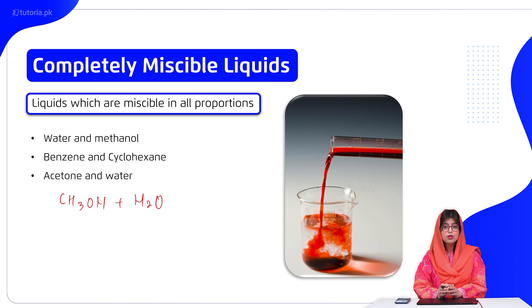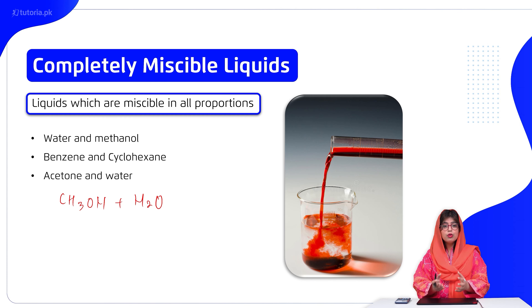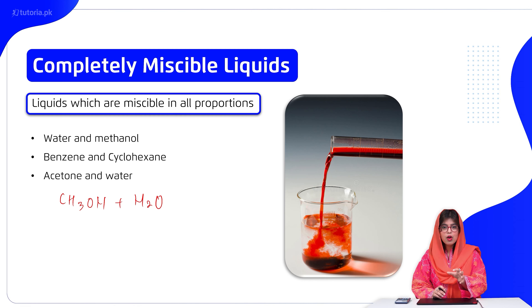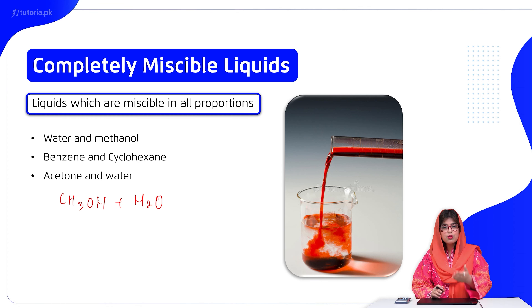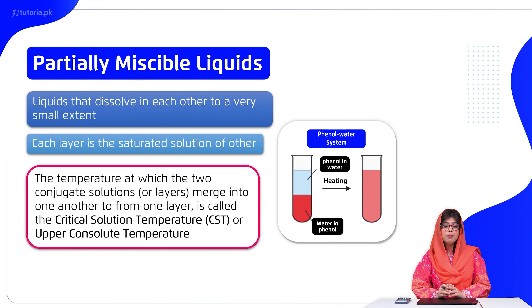Non-polar molecules like benzene and cyclohexane interact through London dispersion forces specifically. These non-polar interactions make benzene and cyclohexane completely miscible, so these liquids mix uniformly. Moving forward, we talk about partially miscible liquids.